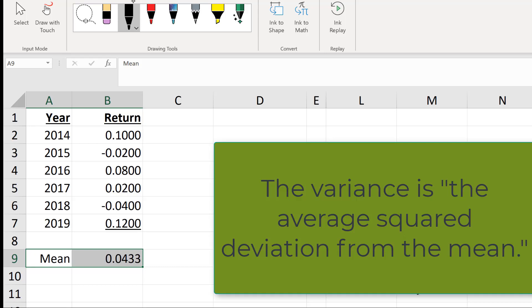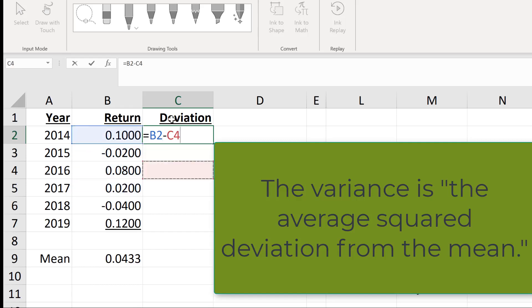That's just the value of the return in a given year minus the mean return. We'll make a column here representing the deviation. I'm just going to say this cell is equal to the return for that year minus the mean value. I'll go back into this formula and anchor my mean value cell so that I can just drag this down.